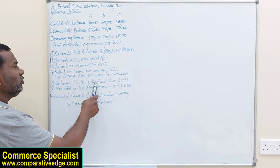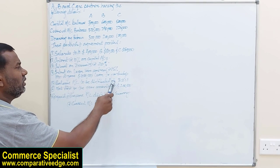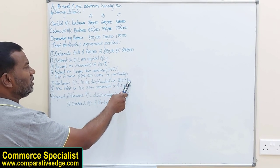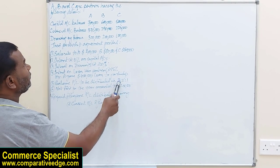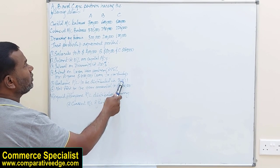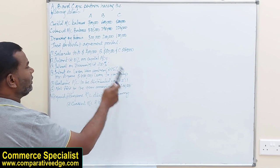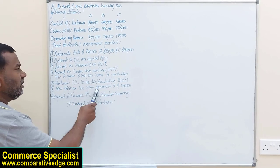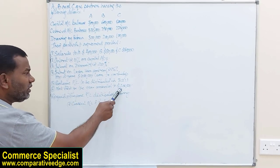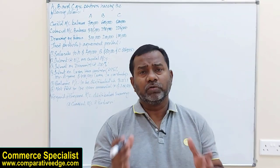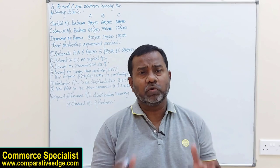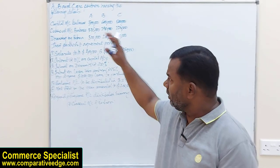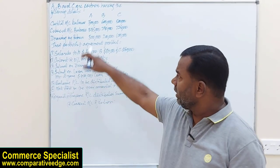Balance profit and loss is to be distributed in the ratio of 3:2:1 — 3 for A, 2 for B, and 1 for C. Net profit for the year amounted to 200,000. We are going to see how this 200,000 is to be distributed among the partners, looking at the salient features of their agreement.